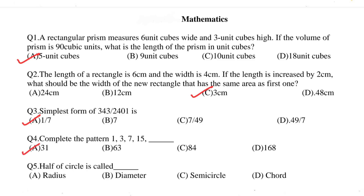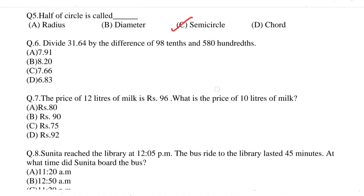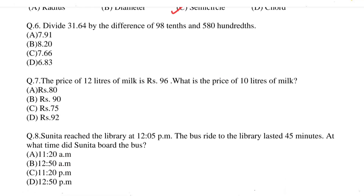Question 5: half of a circle is called dash. The correct option is C, semi-circle. Question 6: divide 31.64 by the difference of 98th/10th and 580/100. The correct option is option A, 7.91.